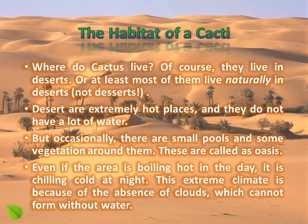Habitat of cacti — where do cactus live? Of course, they live in deserts, or at least most of them live naturally in deserts. Not desserts which you eat! Deserts are extremely hot places and they do not have a lot of water, but occasionally there are small pools and some vegetation around them. These are called oases. Even if the area is boiling hot in the day, it is chilling cold at night. This extreme climate is because of the absence of clouds, which cannot form without water.